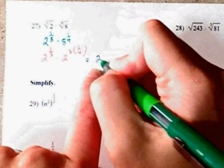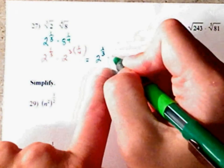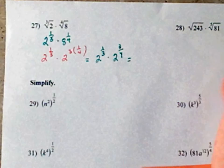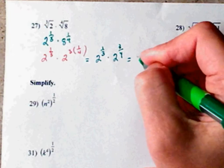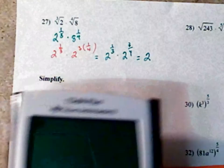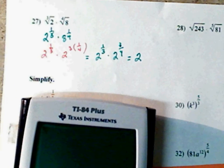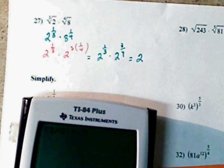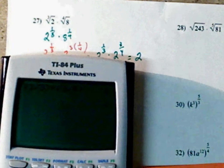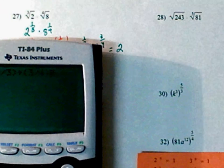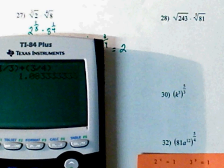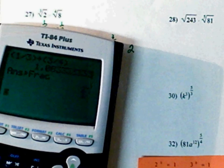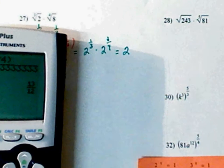Now you can simplify and continue on. So now you have 2 to the 1/3 times 2 to the 3/4. Since they are like base, you can add your exponents. Keep your base. And you have 1 divided by 3 plus 3 divided by 4. Just keep them in fraction form. Convert it to a fraction. That comes out the same as 13 over 12.